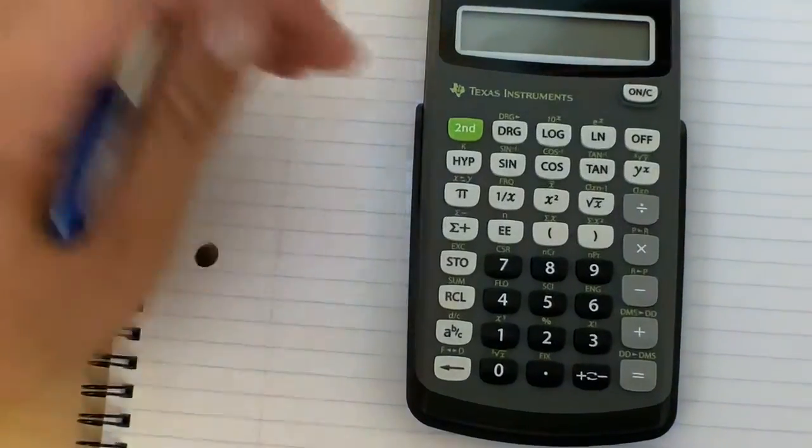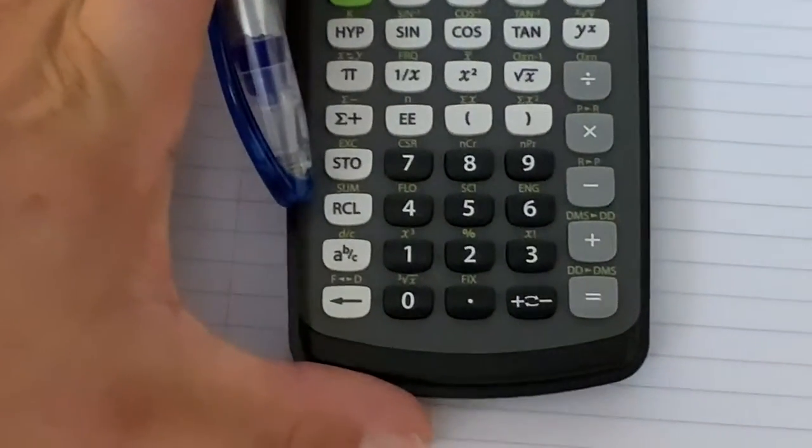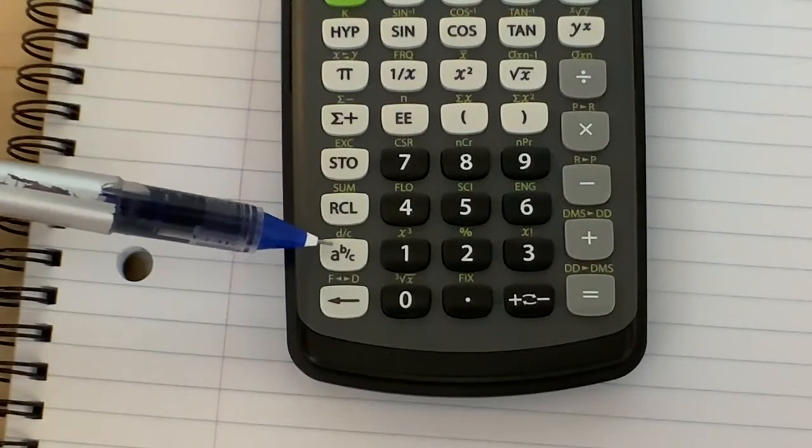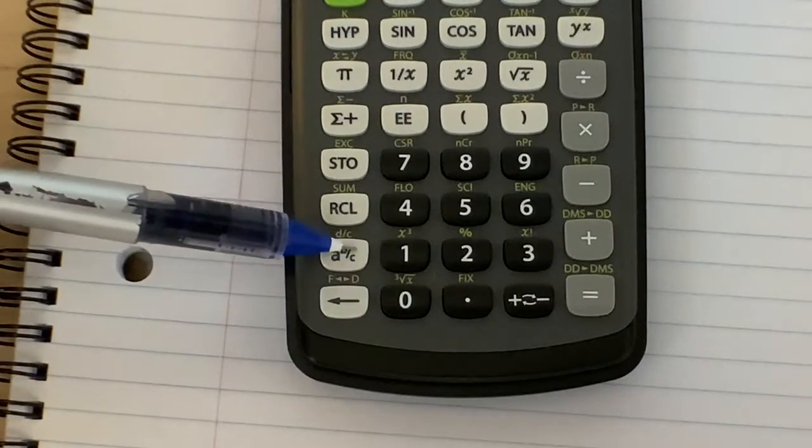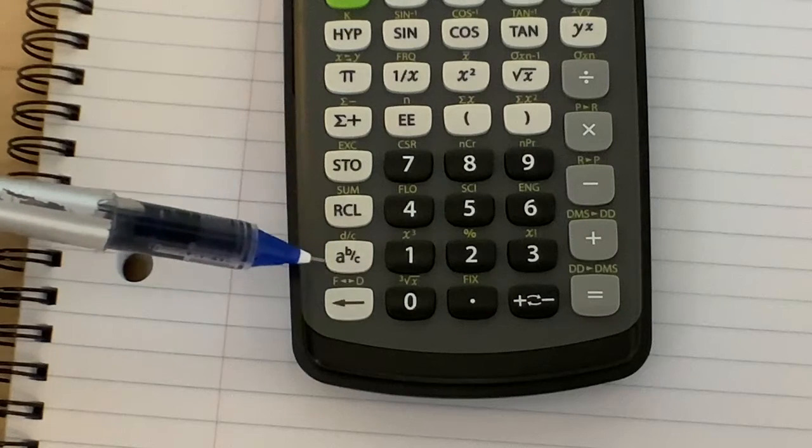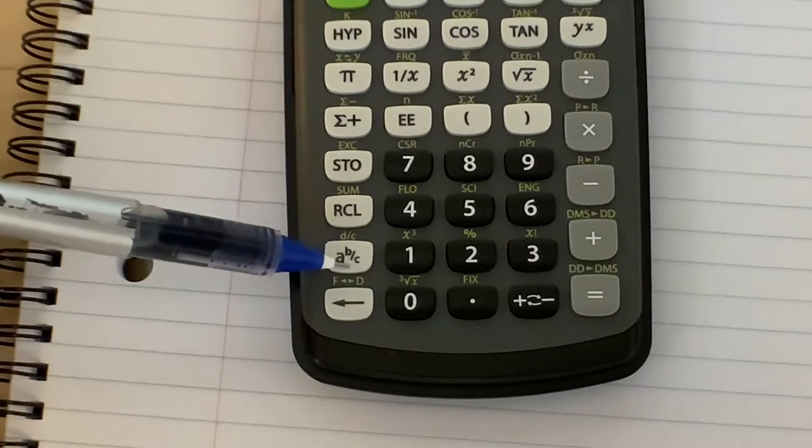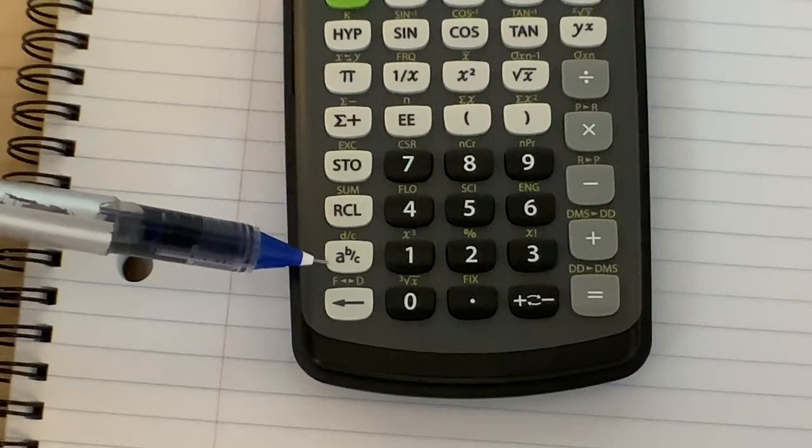It looks like this, and that's your fraction button. Now depending on what calculator you have, this button might look slightly different, but it probably looks something like that with a fraction in it.